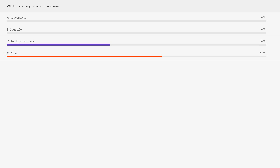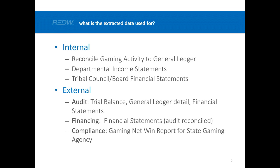When you are extracting data, let's talk about what the purpose of data extraction is — it could be internal and external. For internal use, you may need to reconcile gaming activity to the general ledger. Gaming activity reports could be many operational reports. It could be a department income statement, supporting documents to the income statement, depending on your different departments, divisions, locations, or cost centers. They may require different kinds of reports.